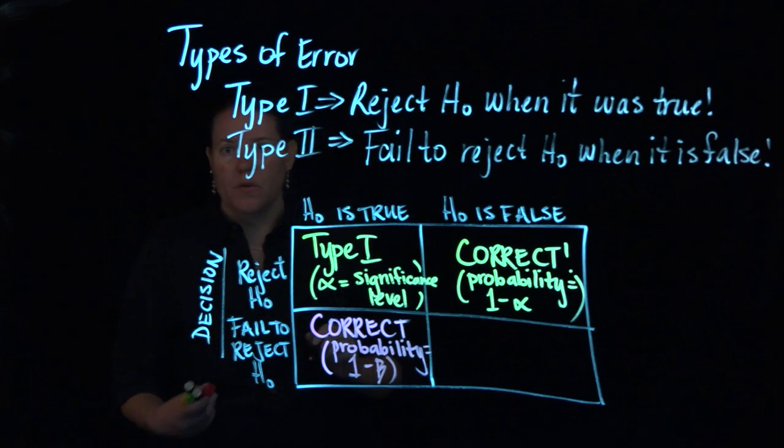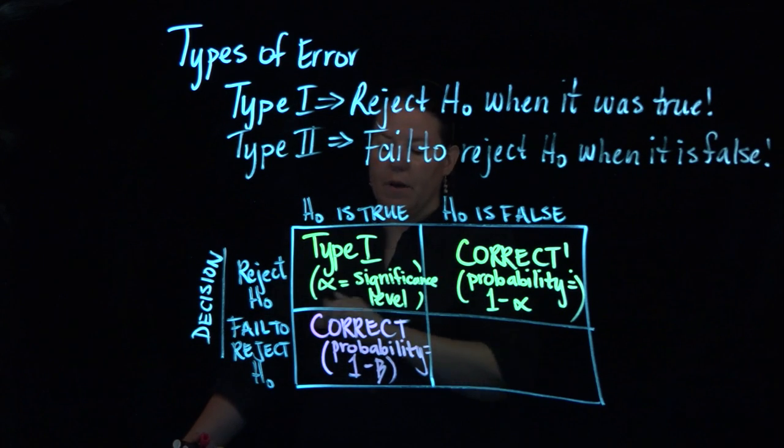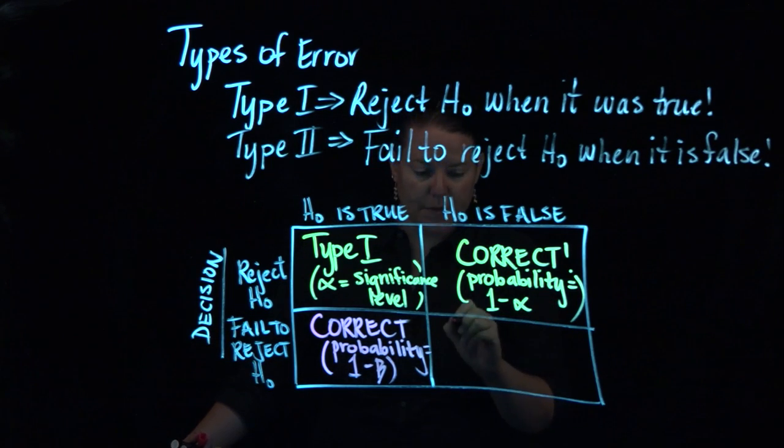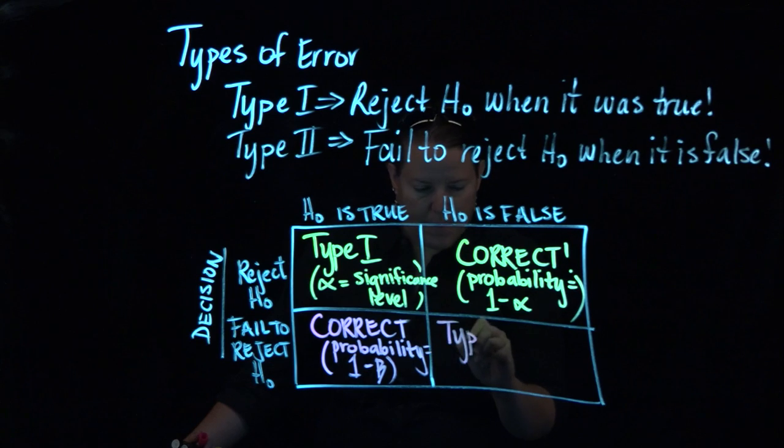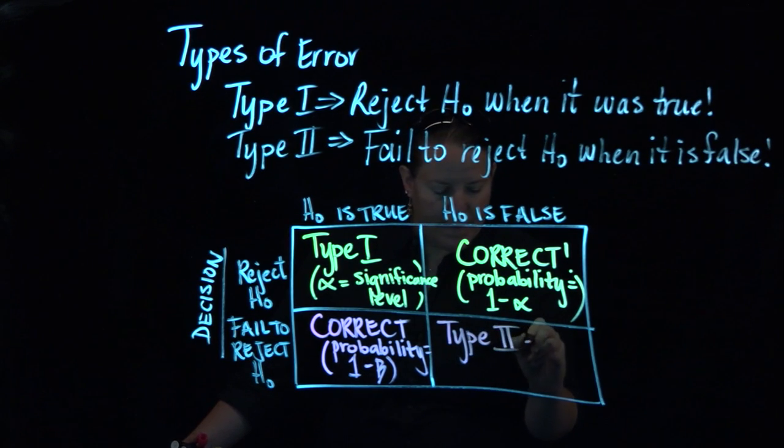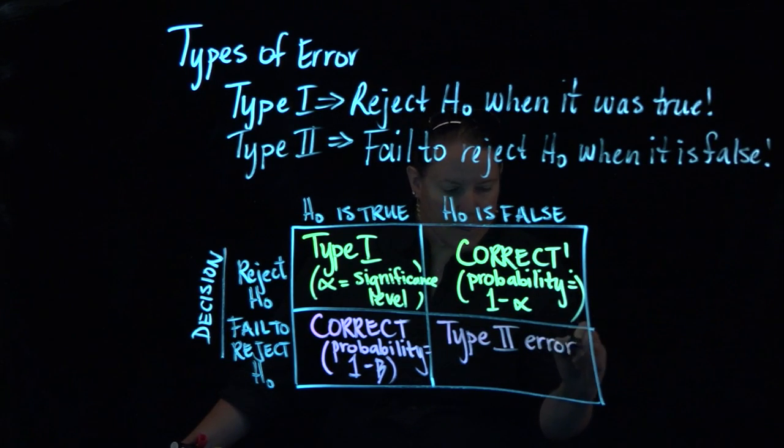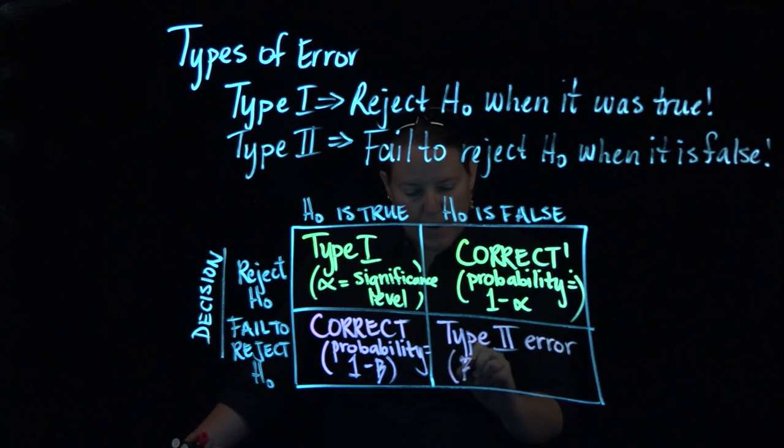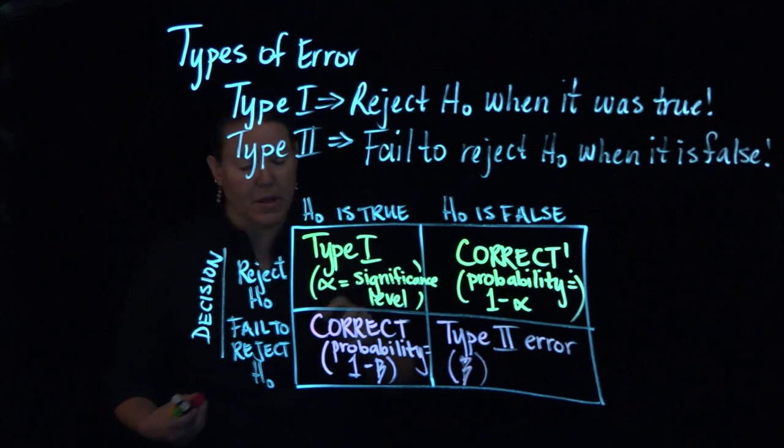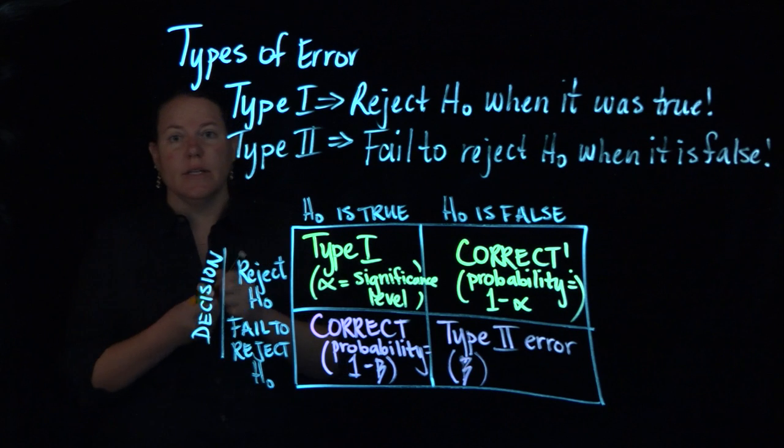Now, why is it beta? Well, because if you fail to reject the null but the null is false, that's Type 2 error. And Type 2 error is given by beta. The probability of getting Type 2 error is given by beta.